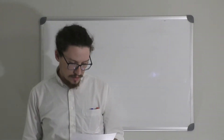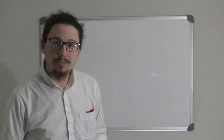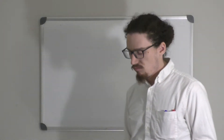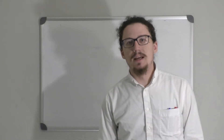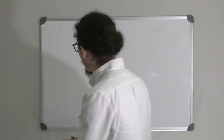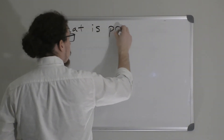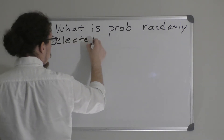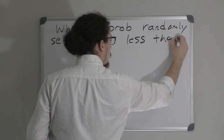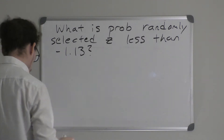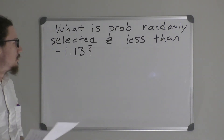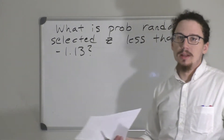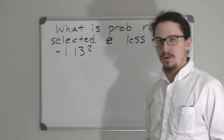Let's talk in more detail about how to find these probabilities. First, let's say we were asked: what is the probability that a randomly selected Z-score is less than negative 1.13? One of the first things we should do every time we approach a probability problem is set up our probability statement.